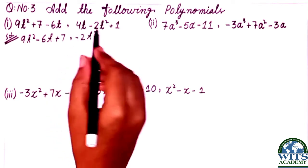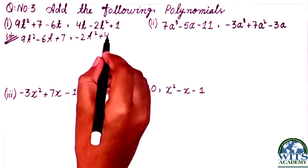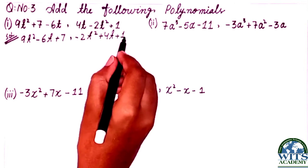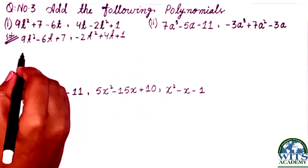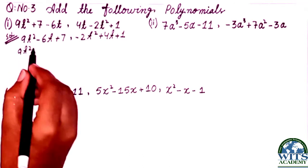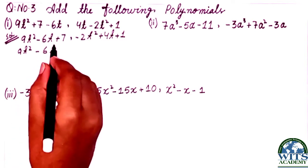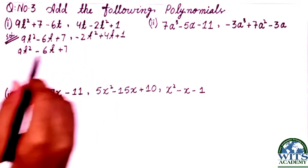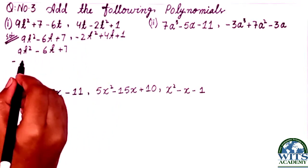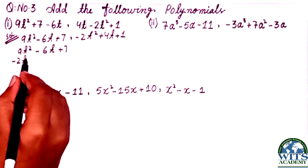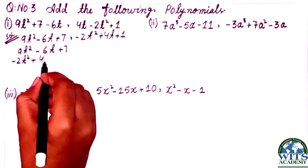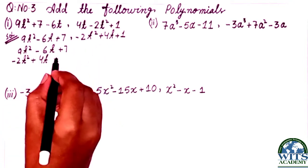We will arrange the second polynomial. First power minus 2t squared, plus sign 4t, plus 1. We arrange and write: 9t squared minus 6t plus 7, then minus 2t squared plus 4t plus 1.